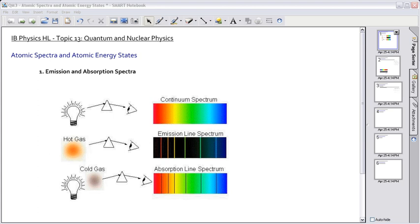Okay, now it's time to talk a little bit about atomic spectra and atomic energy states as we continue along with our quantum and nuclear physics topic here. So the very first thing in the curriculum, at least for the IB, is to talk about emission and absorption spectra.